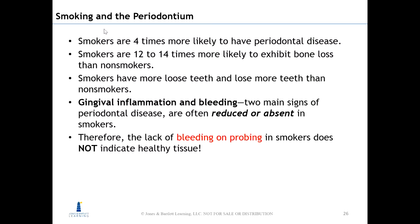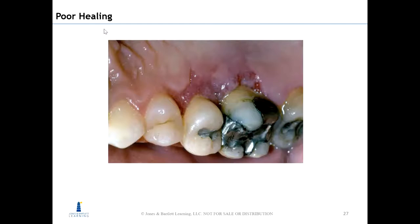Regarding smoking and the periodontium: smokers are four times more likely to have periodontal disease and 12 times more likely to exhibit bone loss than non-smokers. They will have more loose teeth and lose more teeth overall. Bleeding on probing will actually be reduced or absent in smokers because smoking induces a hampered inflammatory response — it damages that response, which also accounts for delayed wound healing. With a reduced inflammatory response and periodontitis, you'll see less bleeding, less gingival inflammation, and no bleeding on palm probing, along with a lack of neutrophils and other inflammatory cells needed to heal tissues.